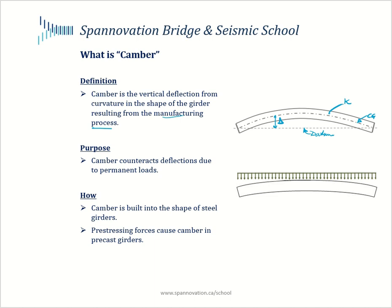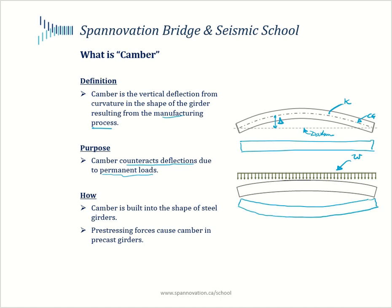The primary purpose of camber is to counteract downward deflections due to permanent loads. Assuming permanent loads act as a uniformly distributed load on your girder, they would impart a downward deflection. Camber offsets those downward deflections — if you had produced your girder as a perfectly straight beam, under the application of permanent loads your girder would go into a sag shape, which is not desirable. That is the primary reason for camber in girders.